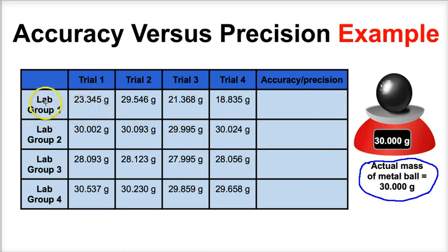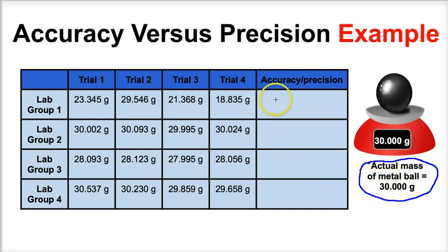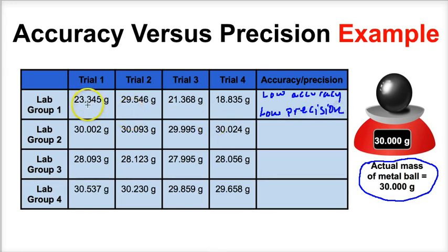Lab group one measured this ball four times: trial one got 23.345 grams, trial two a little closer, trial three a little further away, and trial four very far away. These results are not very close to the actual mass of the ball, so lab group one has very low accuracy. And since the measurements — 23, 29, 21, and 18 — are very far apart from one another, they also have low precision. Lab group one would probably fail this assignment.